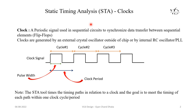If you see here, this is our clock signal. From the first rising edge to the second rising edge, this is our first clock cycle. From the second rising edge to the third rising edge, this is our second clock cycle. An important point to note here is that the duration between the first rising edge to the second rising edge is nothing but our clock period.